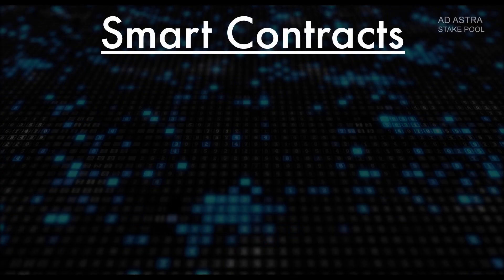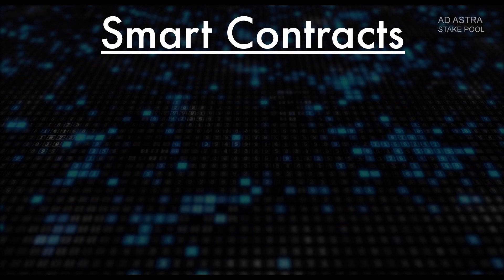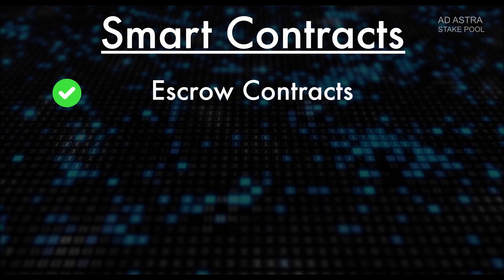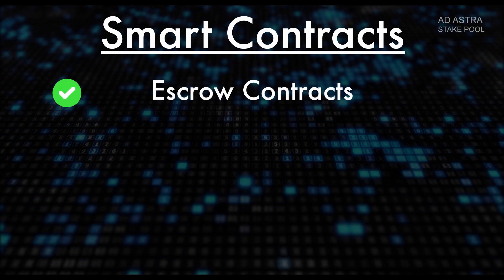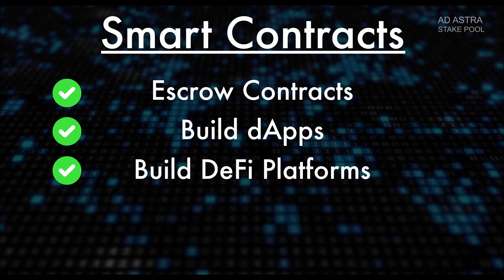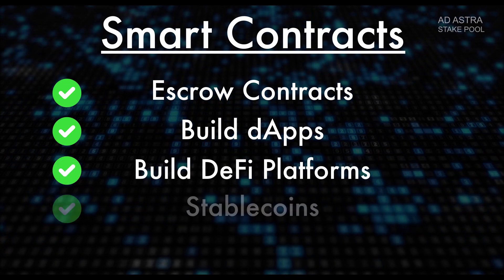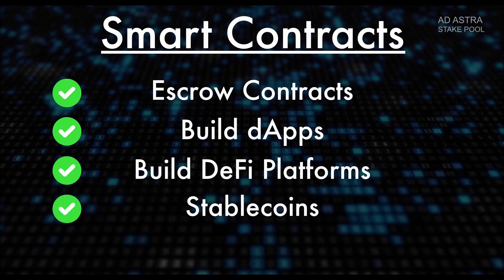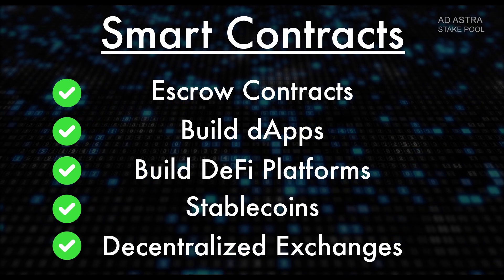Smart contracts are super duper cool — basically they're little programs that run on a blockchain and connect to transactions. You activate them to do interesting things: you can do escrow contracts with them, build dApps, build whole DeFi platforms, build stablecoins, and build DEXes and so forth.